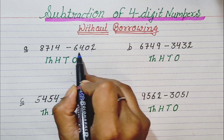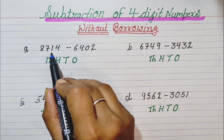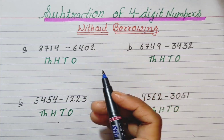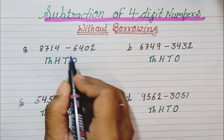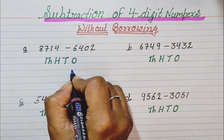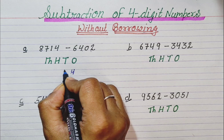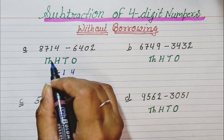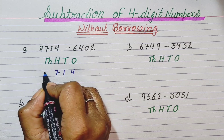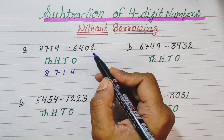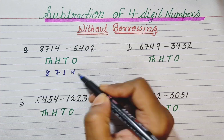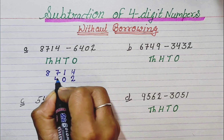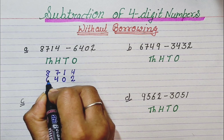We subtract these numbers from these. We write the top number first: 4 in the 1's place, 1 in the 10's place, 7 in the 100's place, and 8 in the 1000's place. Now we write the bottom number below it: 2, 0, 4, 6.